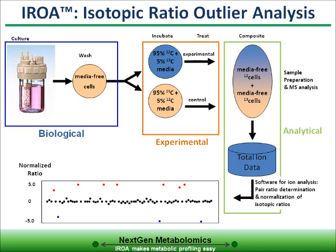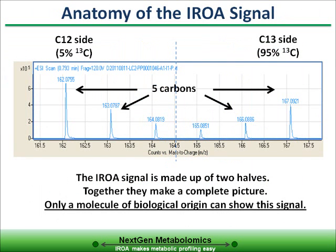One of the biggest problems in metabolomics was sorting biological signal from noise. With AROA, this is no longer true. Any biological compound within the pooled samples will have two paired peaks. The peak from the C12 media is mirrored by a second peak from the C13 media. The distance between these peaks readily identifies the number of carbons in the compound. In addition, the height of either the M+1 or M-1 also confirms the number of carbons.